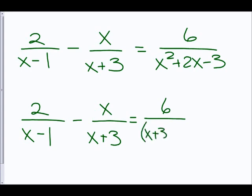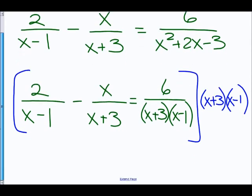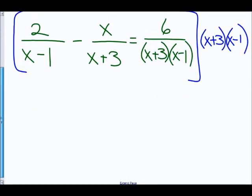The first thing we have to do is factor the trinomial. Two numbers that multiply to negative 3 and add to positive 2 are positive 3 and negative 1. Now I want to get rid of my entire denominator. I'll do this by multiplying everything by a common denominator, which is x plus 3 times x minus 1.